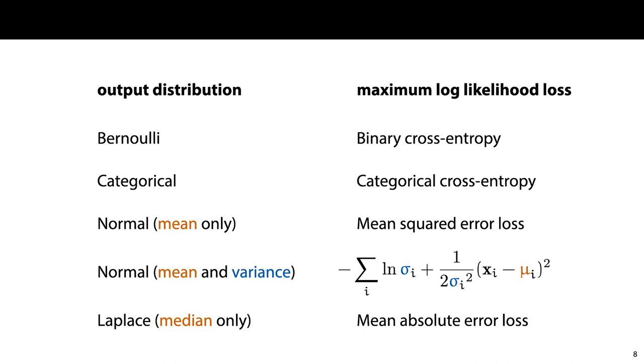Given an output distribution, we can simply train to maximize the log likelihood of our data. For many output distributions, this leads to loss functions that we've seen already. A Bernoulli distribution leads to binary cross-entropy, a categorical distribution leads to categorical cross-entropy, a normal distribution with only the mean specified leads to mean squared error loss, and a Laplace distribution with only the median specified leads to mean absolute error loss. The loss function for a normal distribution with a mean and a variance is a modification of the squared error loss. We can set the variance larger to reduce the impact of the squared errors, but if we do so, we pay a penalty of the logarithm of sigma.